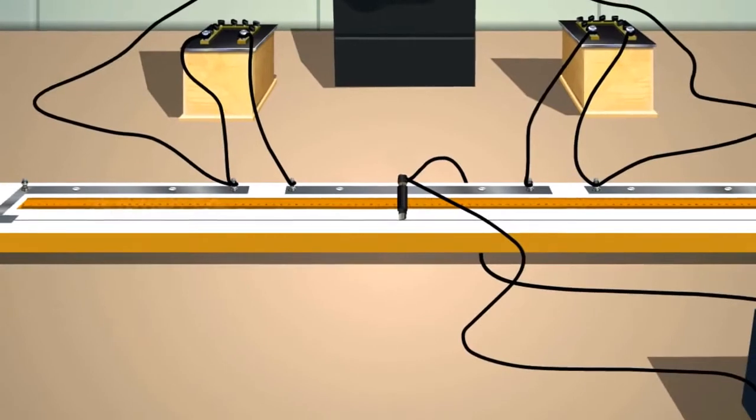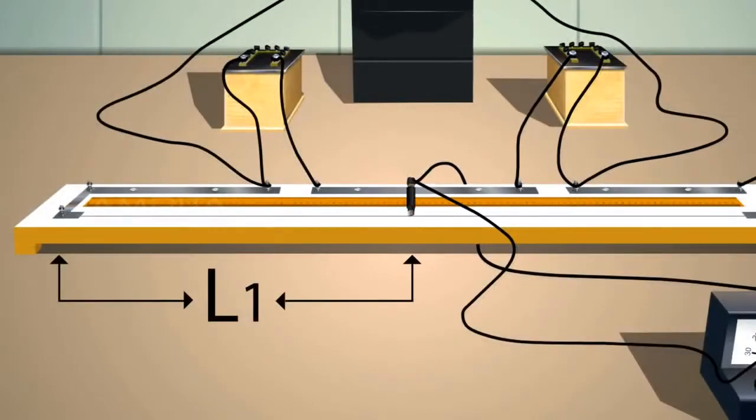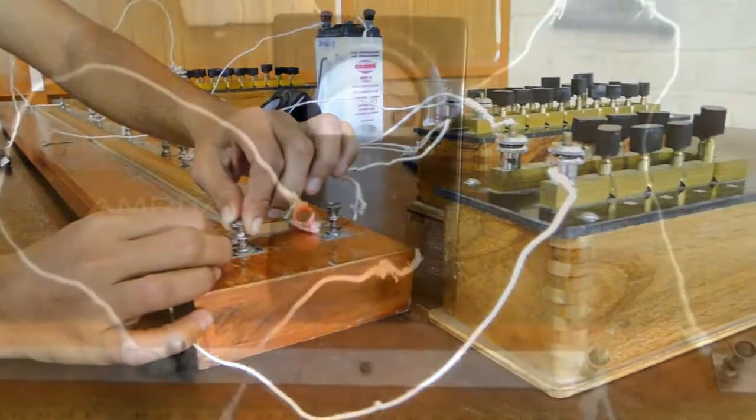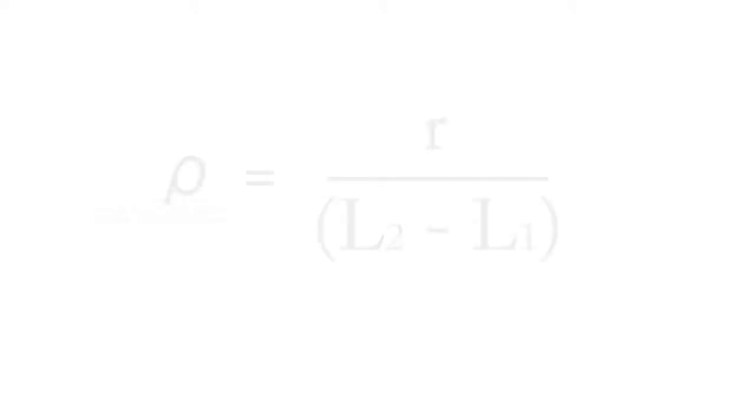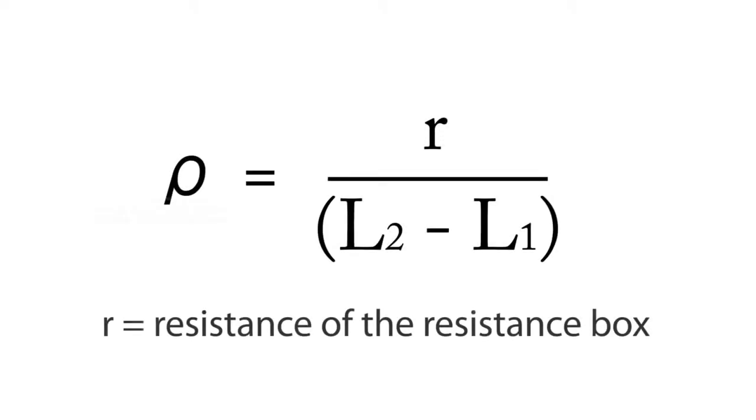Take the length from the left end to the balancing point of bridge wire. This is L1. Interchange the position of the copper strip and resistance box and find out the balancing length L2 using the previous step. Apply L1 and L2 in the equation and find ρ. ρ equals X divided by the difference of L2 and L1.